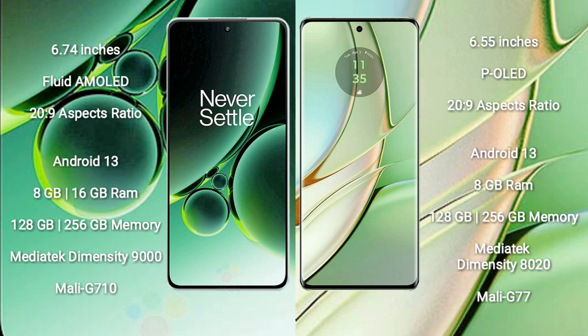OnePlus Nord 3 features a MediaTek Dimensity 9000 processor and GPU Mali-G710. Motorola Edge 40 comes with 8GB RAM and 128GB or 256GB internal storage, with a MediaTek Dimensity 8200 processor and GPU Mali-G77.